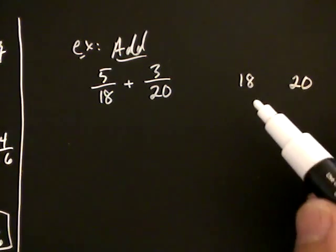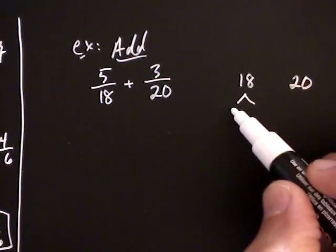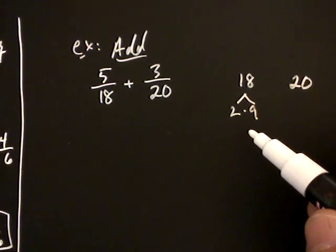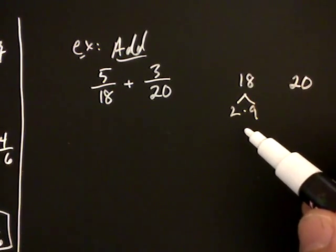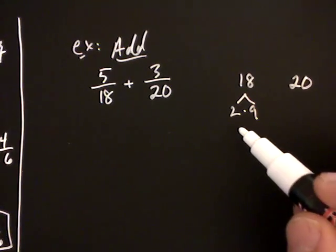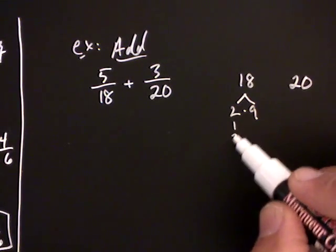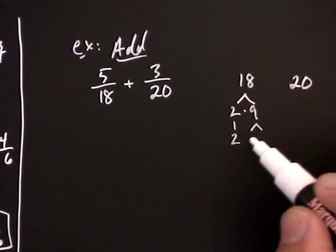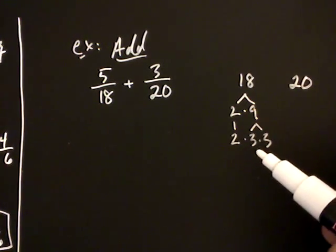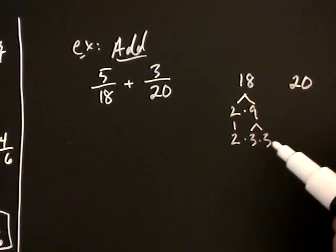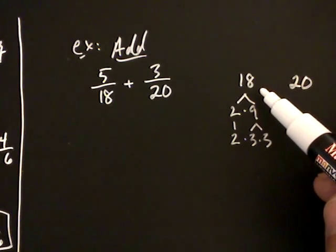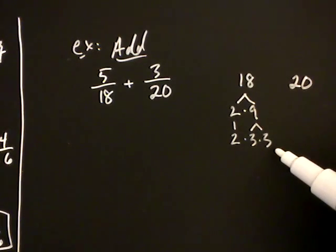For example, I can see that eighteen is two times nine. Somebody else could start with three times six, and it turns out that where you start is not going to affect your end result. So two times nine is fine. Two is prime, and nine can be written as three times three. At this stage, two and three are prime numbers, so eighteen has been written as a product of prime numbers.